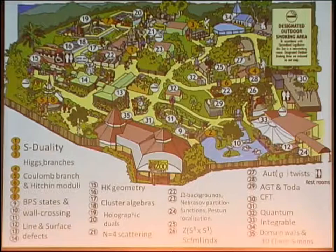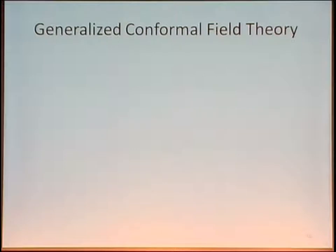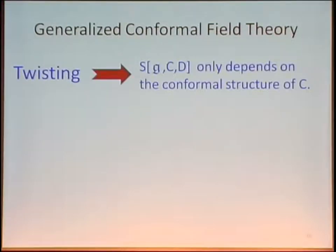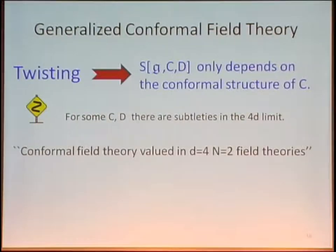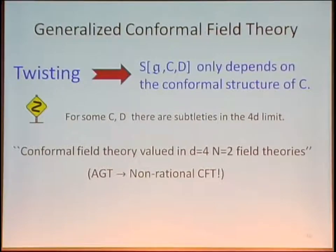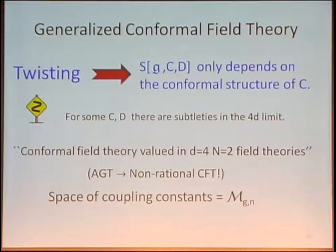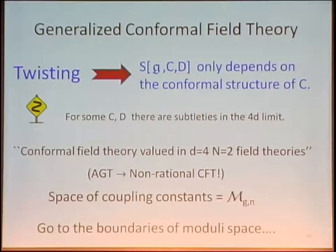A guiding principle on our trip is that what we're dealing with here is a kind of generalization of conformal field theory. Because of this twisting, this four-dimensional theory only depends on the conformal structure of C. What we have here is what you might call conformal field theory valued in four-dimensional N=2 theories. From AGT, we know that the intuition here should be not rational conformal field theories like the Wess-Zumino-Witten model, but more like non-rational conformal field theories like Liouville and Toda. Nevertheless, the space of coupling constants can be identified with the moduli space of genus-g curves with N punctures, so it's interesting to go to the boundaries of these moduli spaces.